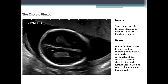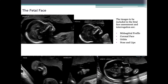The choroid plexus: sweep superiorly in the axial plane from the level of the BPD to the choroid plexus, which is a network of blood vessels that produces cerebrospinal fluid. At this level, findings such as choroid plexus cysts (a soft marker), asymmetry of the choroid, a dangling choroid sign, and further appreciation of ventriculomegaly may be achieved. Moving on to the fetal face: the images to be included are the mid-sagittal profile, the coronal face, orbits, and nose and lips.